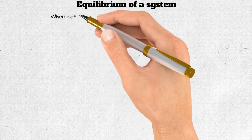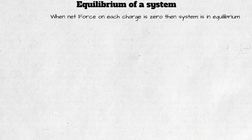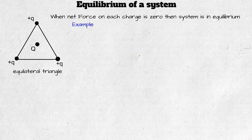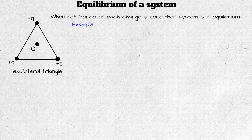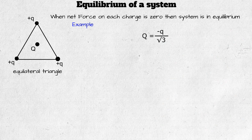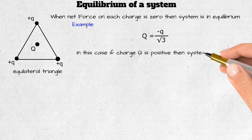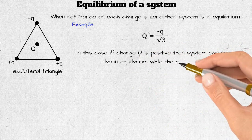Equilibrium of a system: if the net force on each charge is zero, the system is in equilibrium. For example, the net force on capital Q charge being zero doesn't depend on whether it is positive or negative. For the system to be in equilibrium, capital Q must equal −q / √3. If charge Q is positive, the system can never be in equilibrium.